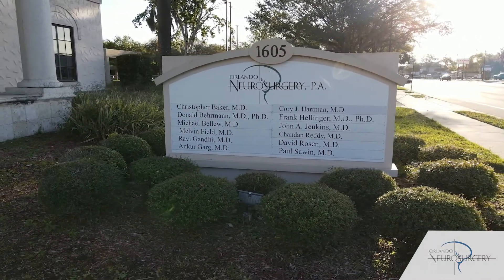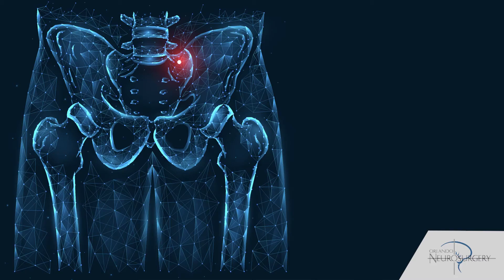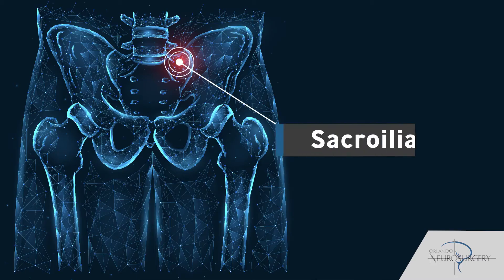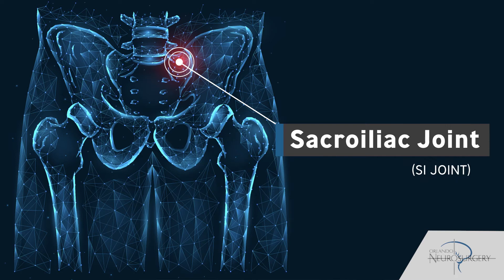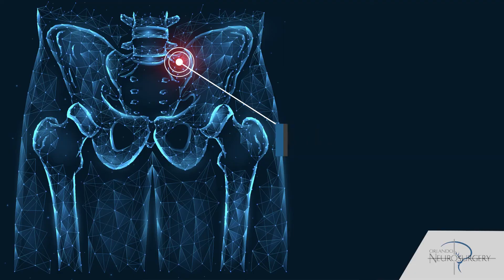The sacroiliac joint helps connect the sacrum, which is at the base of the spine, to the pelvis, down into the hips, and then to the legs. It almost works as a shock absorber from the lower extremities to the spine. You can have degenerative changes such as arthritis or other problems that cause pain in this region.